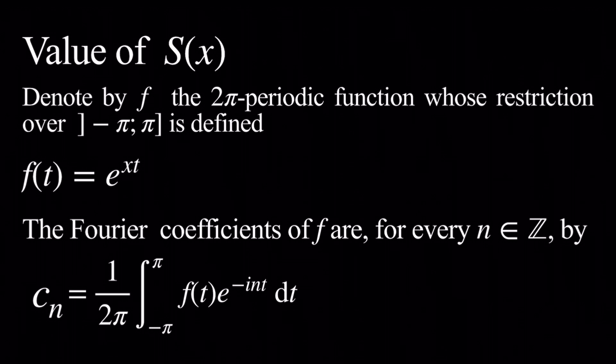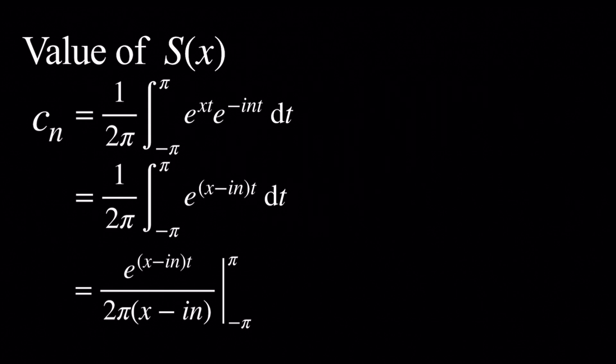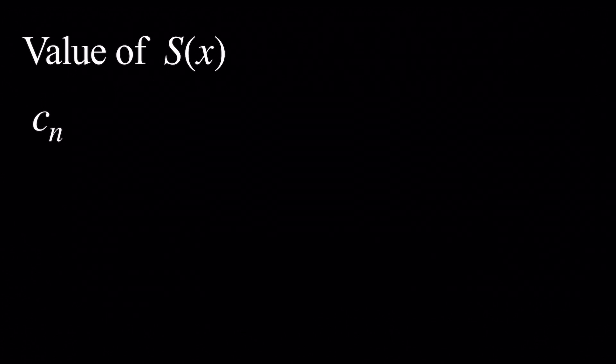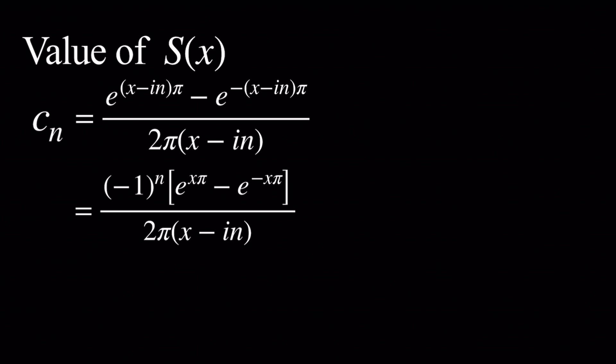Now we just need to plug f of t into the formula and compute. Using properties of the exponential, we can write this as a single exponential, e to the x minus i n times t. We integrate — an antiderivative of e to the k t where k is non-zero is given by e to the k t divided by k. So this gives e to the x minus i n times t divided by 2π times x minus i n, evaluated between negative π and π. We use Euler's formula: e to the negative i n π and e to the i n π are both equal to negative 1 to the n. We factor that out and write e to the x π minus e to the negative x π divided by 2 as the hyperbolic sine of x π.